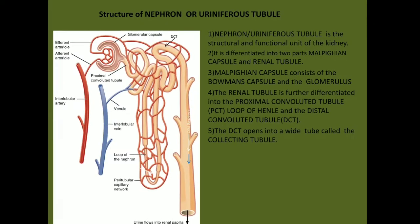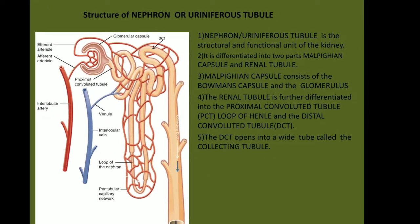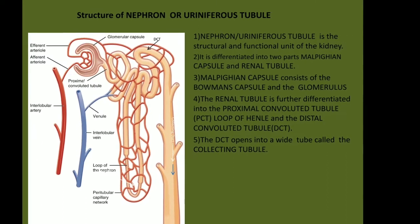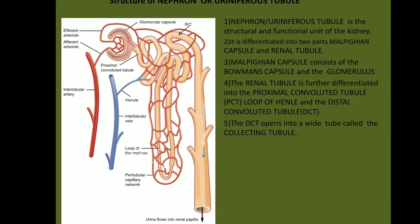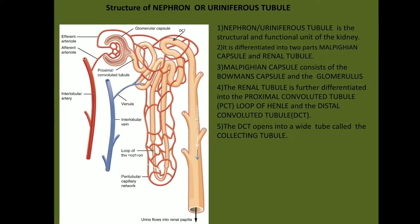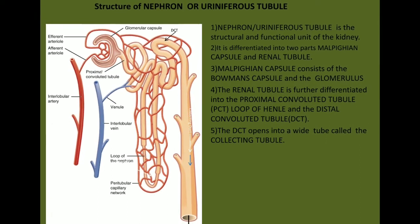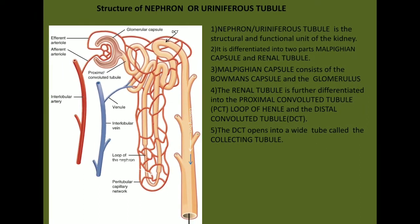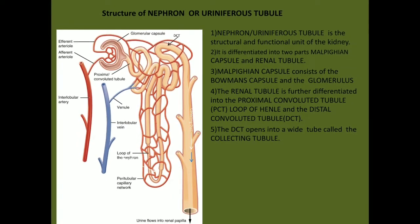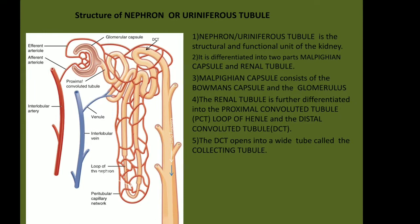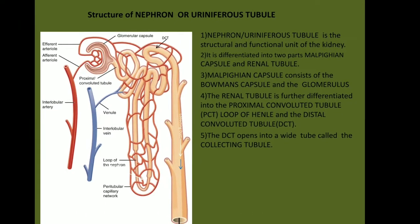Inside each kidney there are a million small units known as nephrons or uriniferous tubules. They are the structural and functional unit of a kidney. The nephron is differentiated into two parts: the Malpighian capsule and the renal tubule. The Malpighian capsule consists of the Bowman's capsule and the glomerulus. The Bowman's capsule is the cup-shaped structure seen in the diagram, and the tuft of blood vessels inside the Bowman's capsule is known as the glomerulus.